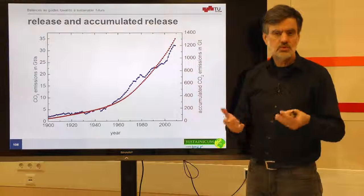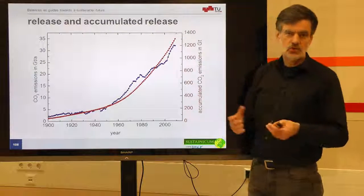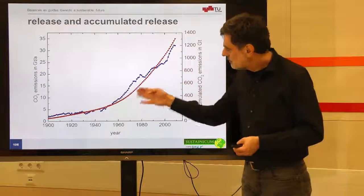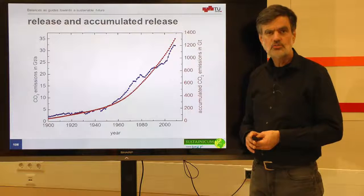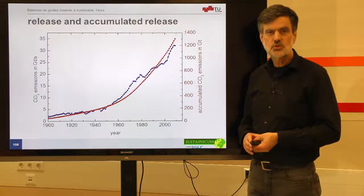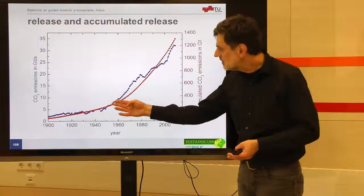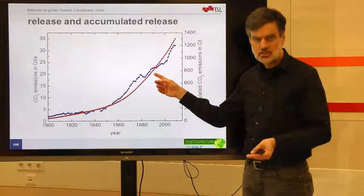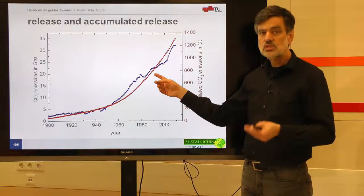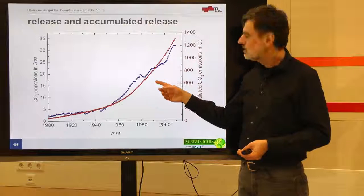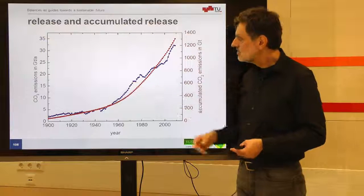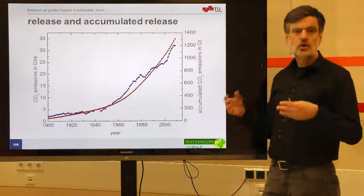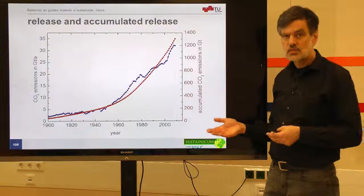For those more mathematically familiar: if the behavior is exponential, integrating the exponential will wind up as an exponential again. So the principal behavior of an exponential curve and its integrated accumulated form is identical. We can take either the momentary release of CO2 or the accumulated CO2, and over the decades we will get identical results.